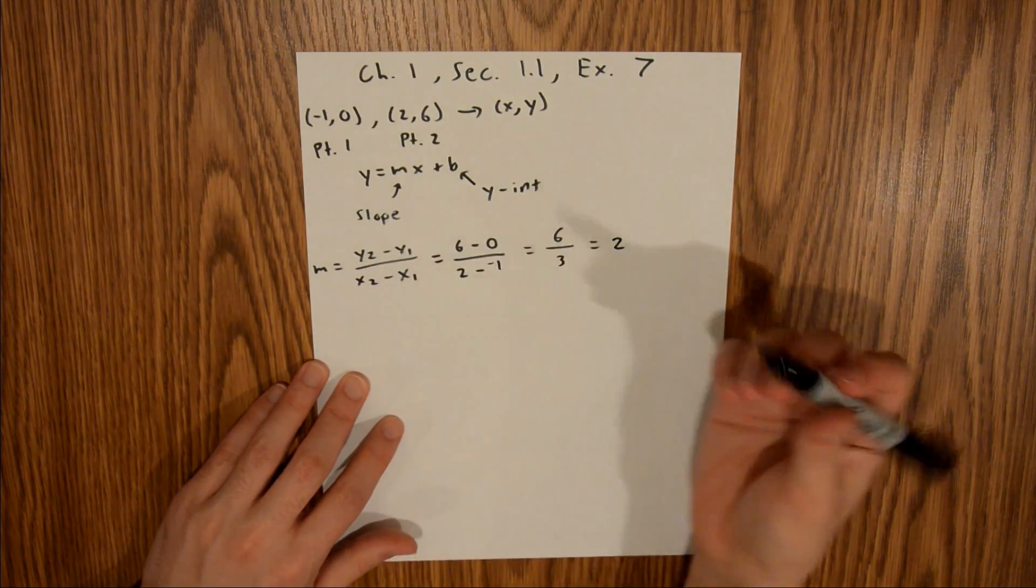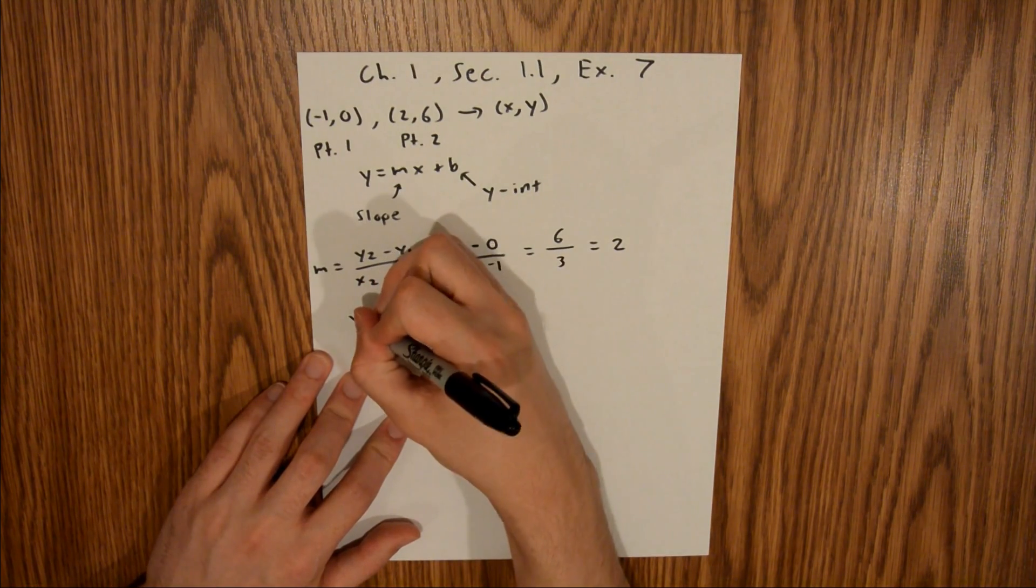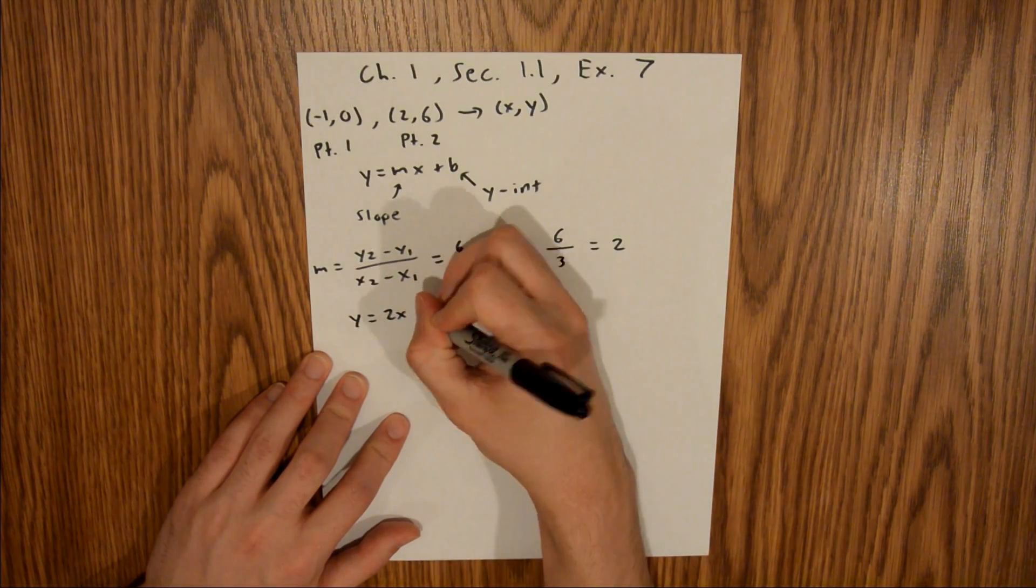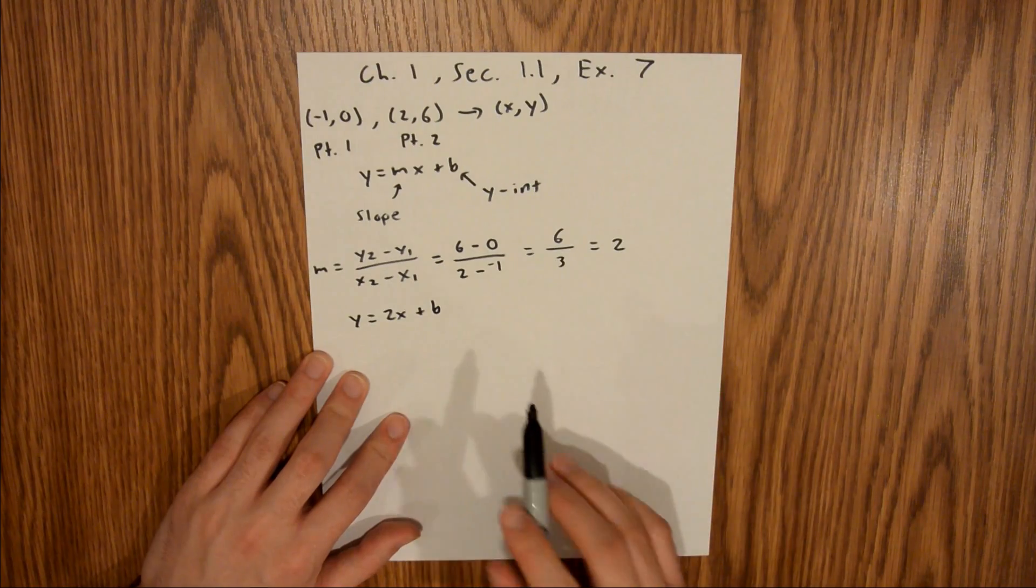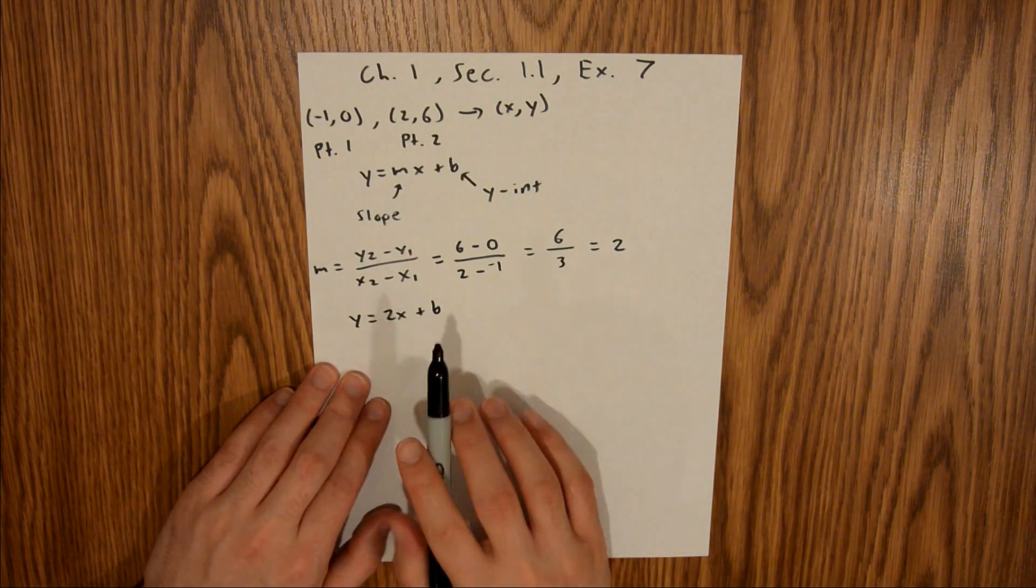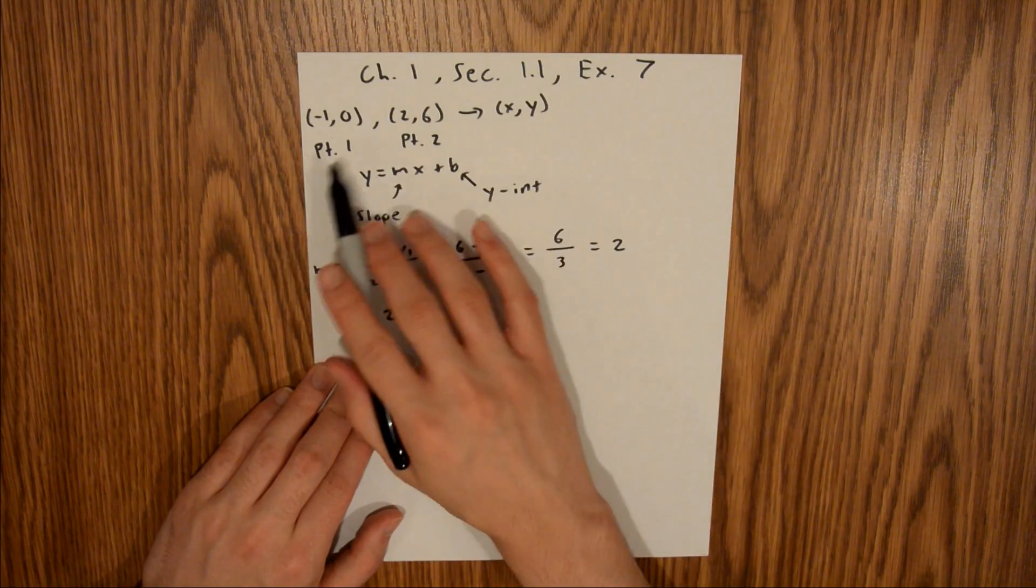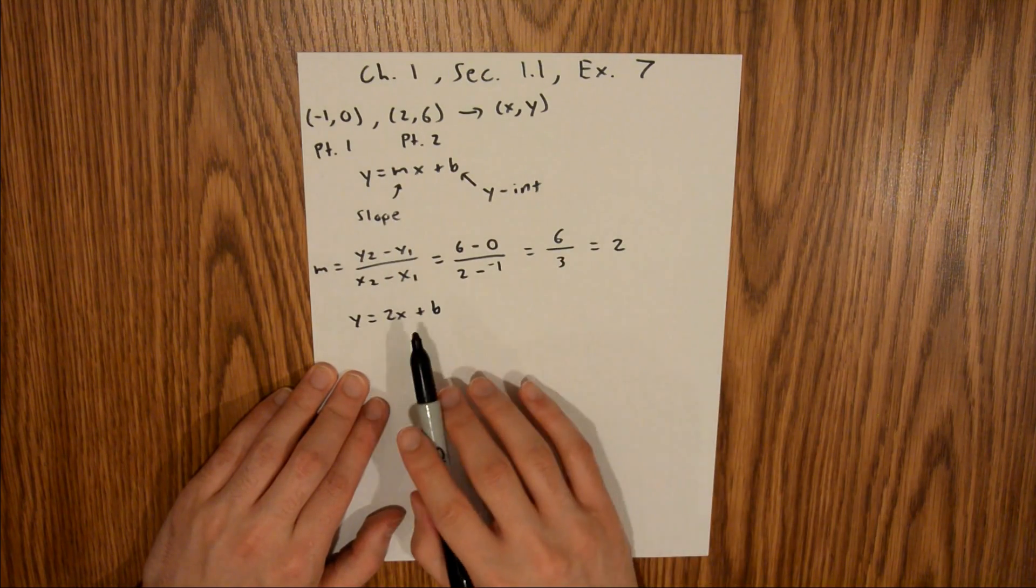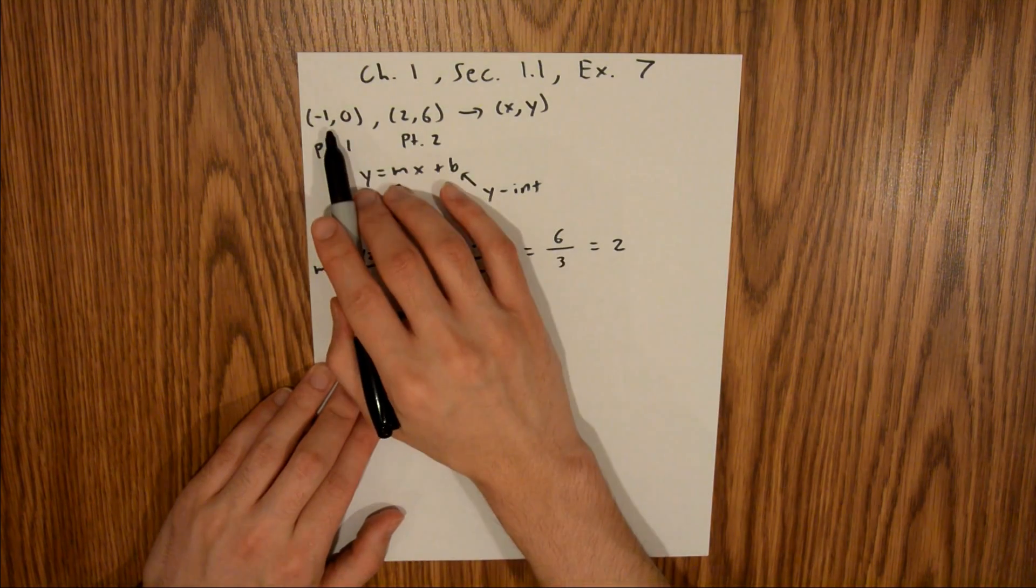Now we can find our y-intercept. The way you do that is you plug in either of your points—either one will give you the same y-intercept—and then solve for b. I'm going to plug in point 1. Using point 1,